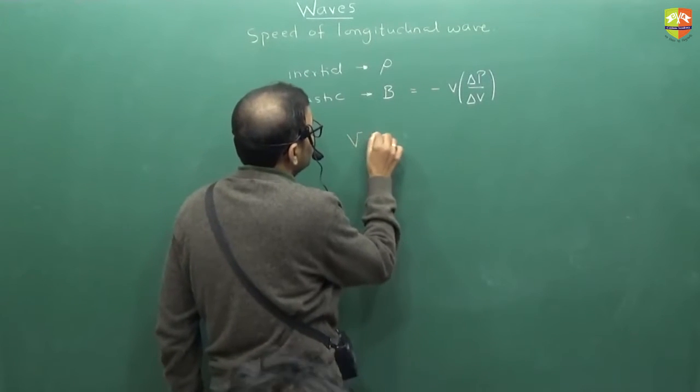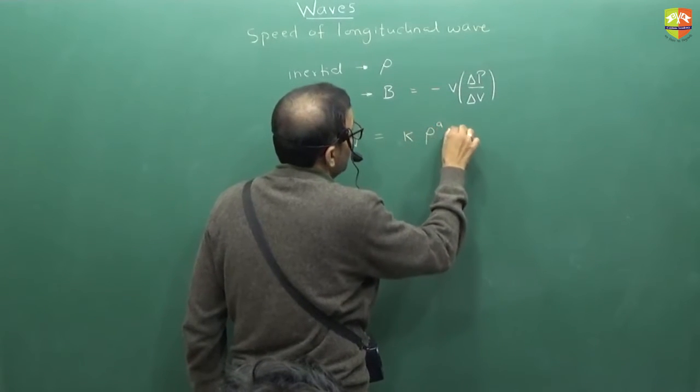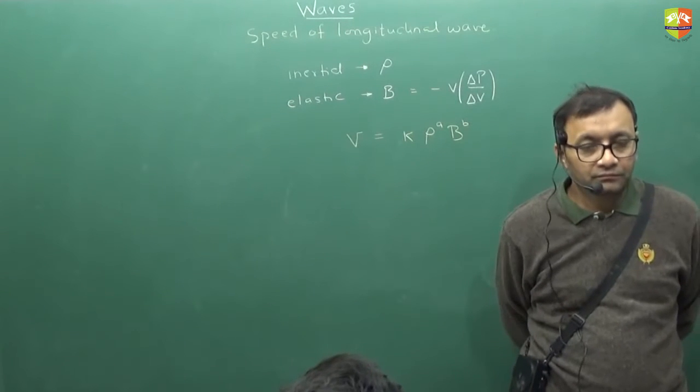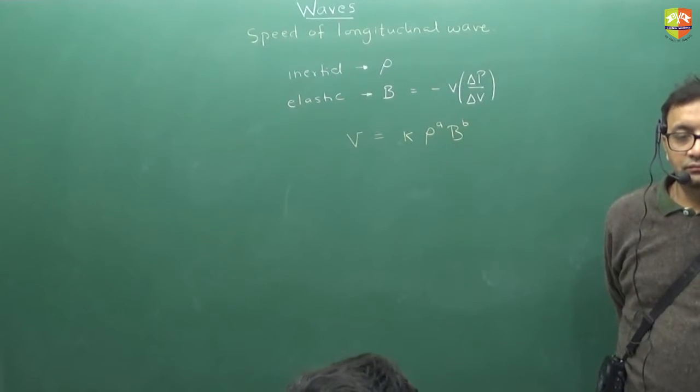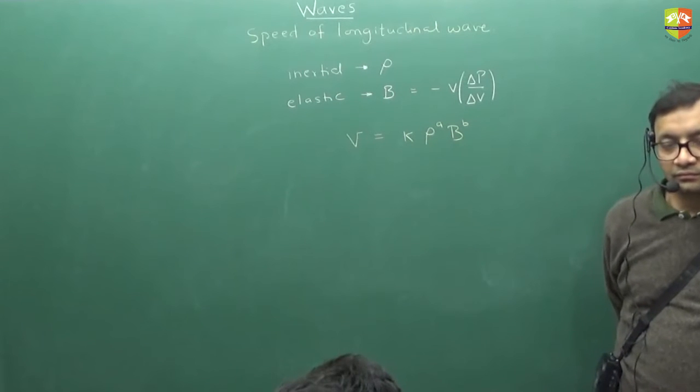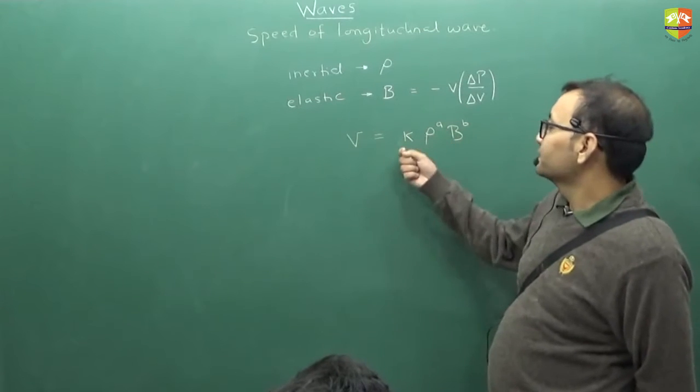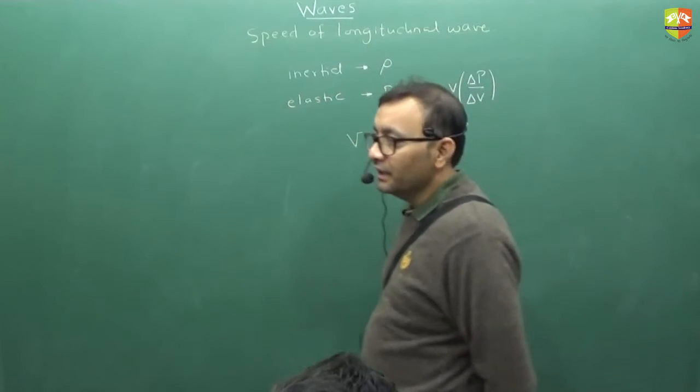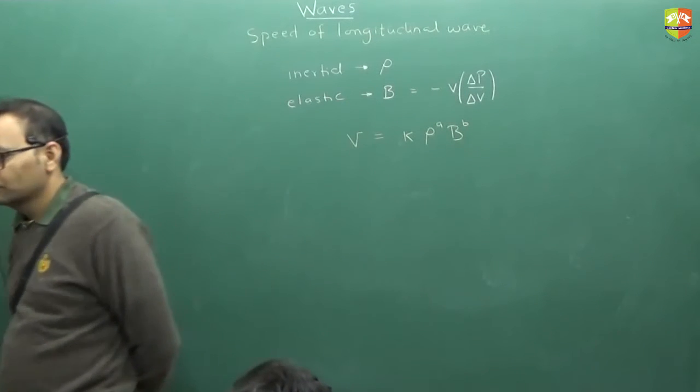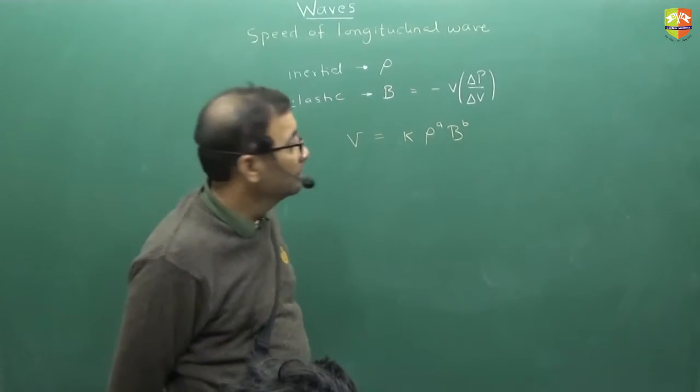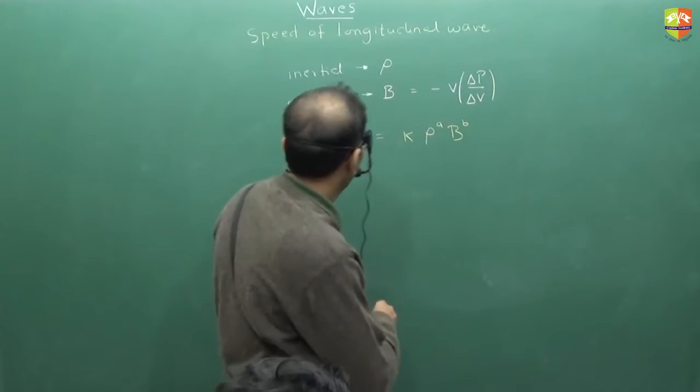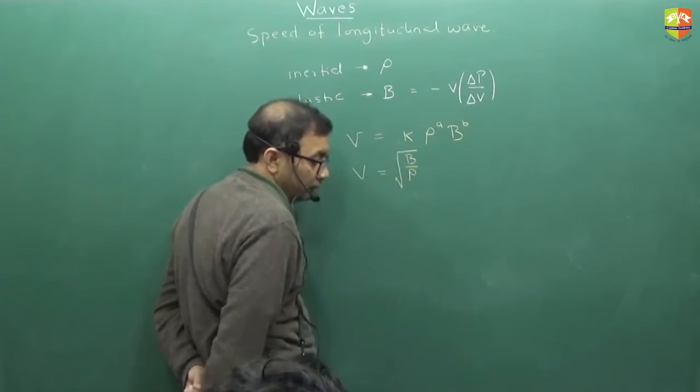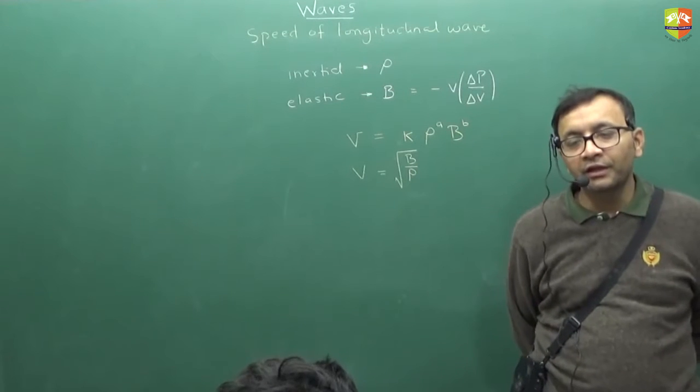So please use the dimensional analysis to find out what are the values of a and b if velocity is depending on that. Sir, if over here the elastic thing is bulk modulus, then why don't we use shear modulus for transverse waves? That is not shear modulus. Tension. Using dimension analysis, you'll get it. So velocity is root over B by rho. B by rho. Remember this is the formula for the longitudinal wave.